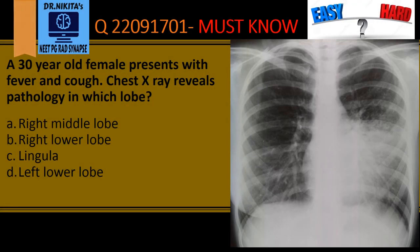A 30-year-old female presents with fever and cough. The chest X-ray reveals a pathology — which lobe is involved? Looking at the chest X-ray, we see an opacity on the left side. So automatically, options A and B, which are the right-side options, are ruled out.